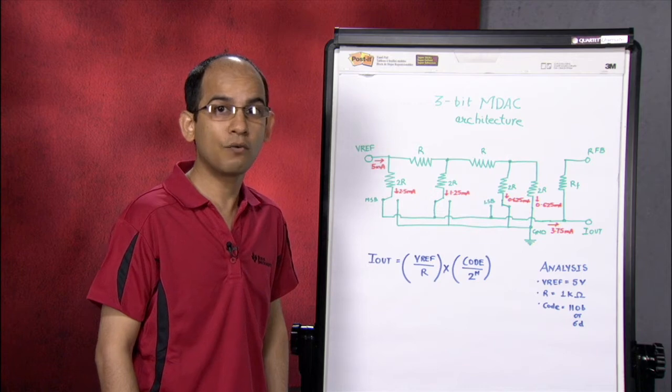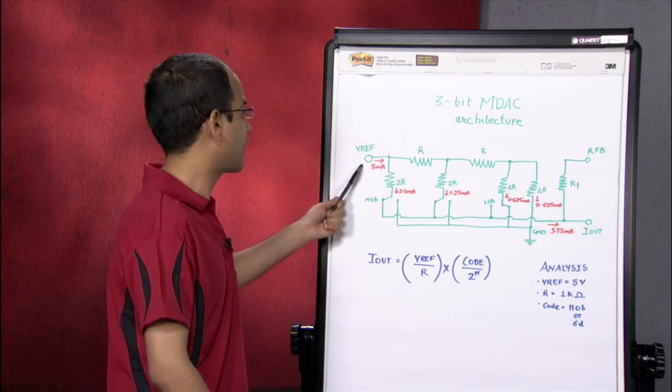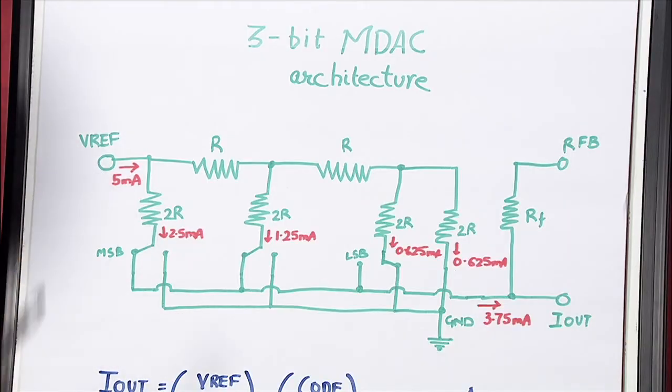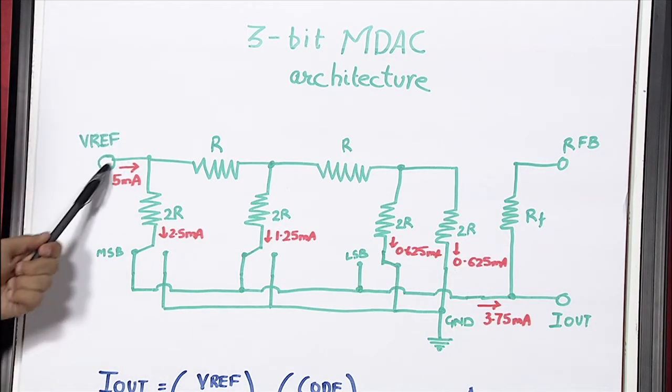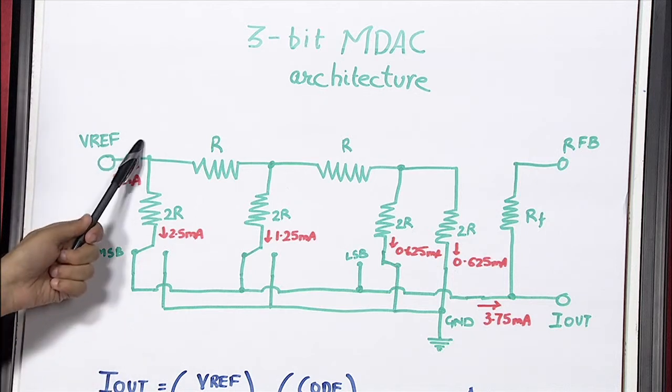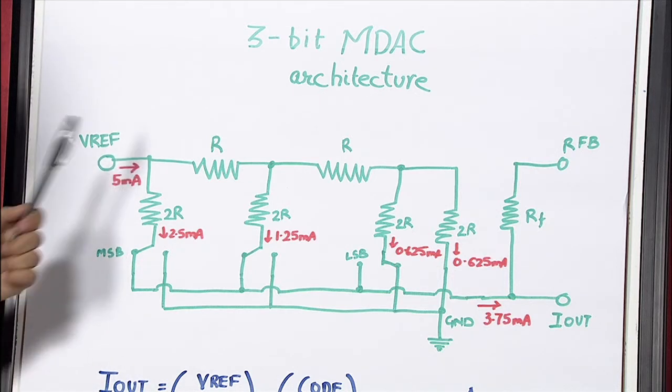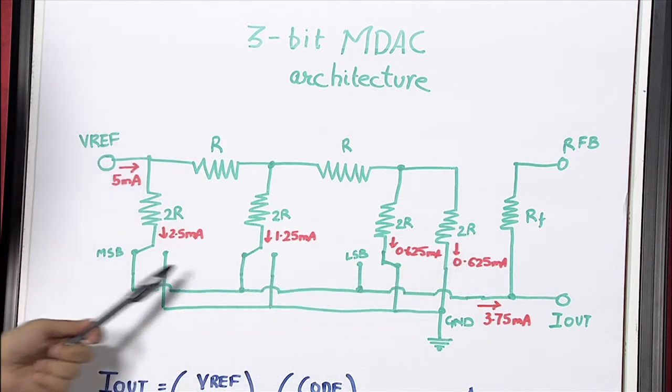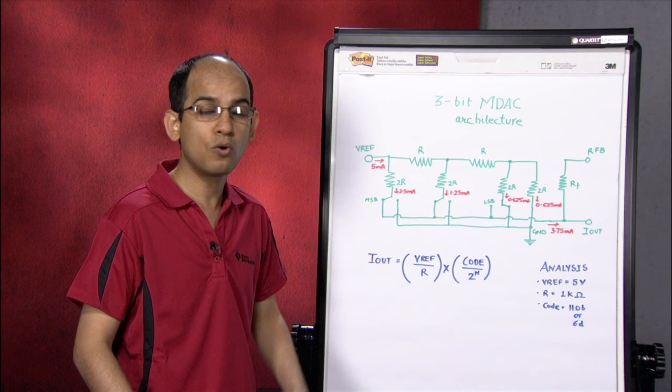Now, to calculate the current flowing into the IOUT pin, you have to find how much current flows into the VREF pin first. Well, the current flowing into the VREF pin would be this voltage VREF divided by the equivalent series resistance looking into this terminal. So, the equivalent series resistance looking into this terminal is R.